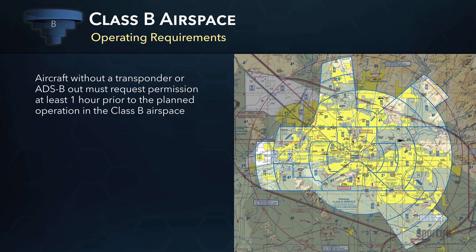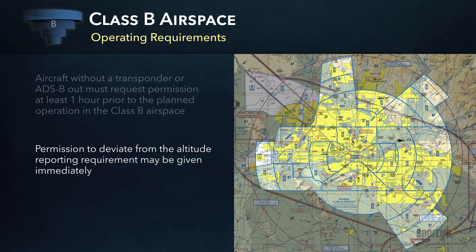First, an aircraft without a transponder or ADS-B out may operate in Class B if the request for the deviation is made to ATC at least one hour prior to the proposed operation. Authorization to deviate from the altitude reporting requirement may be given immediately.